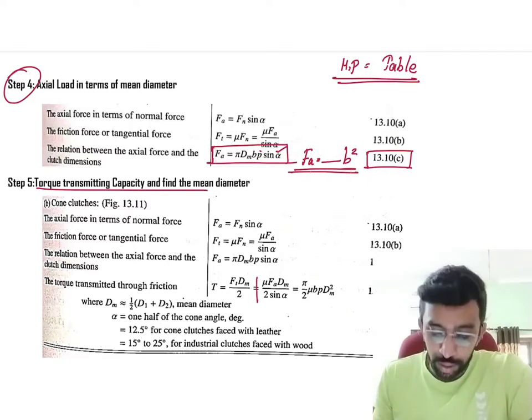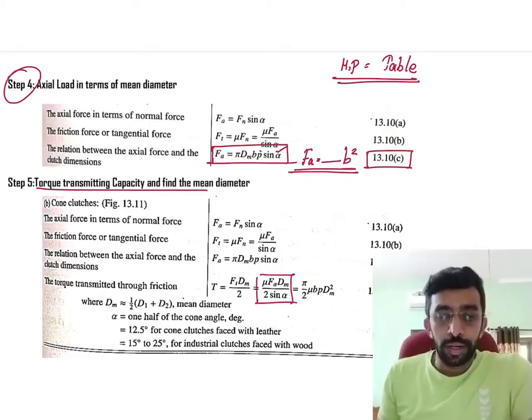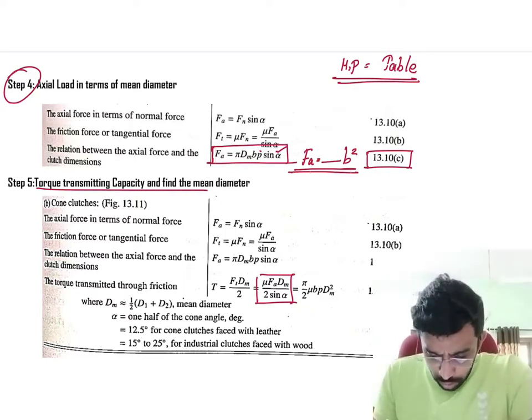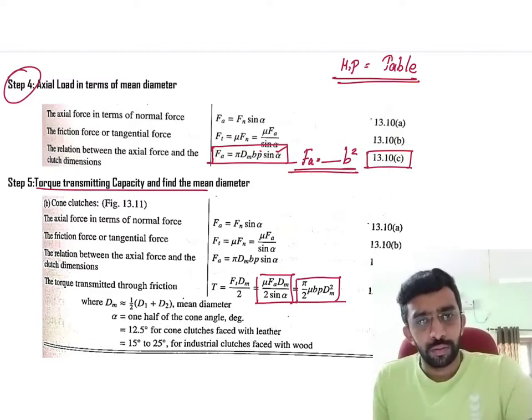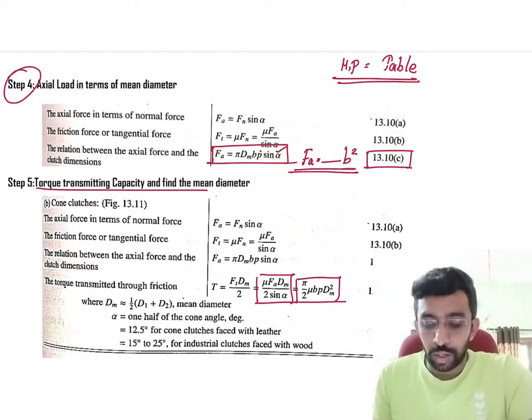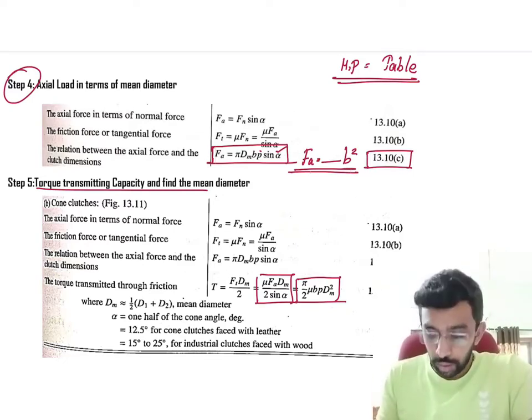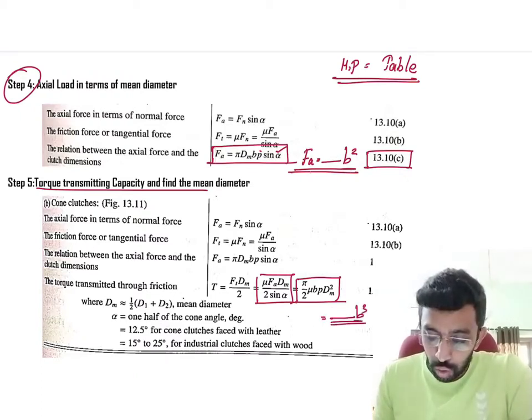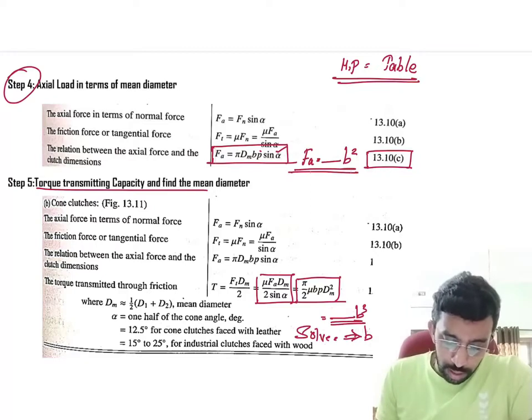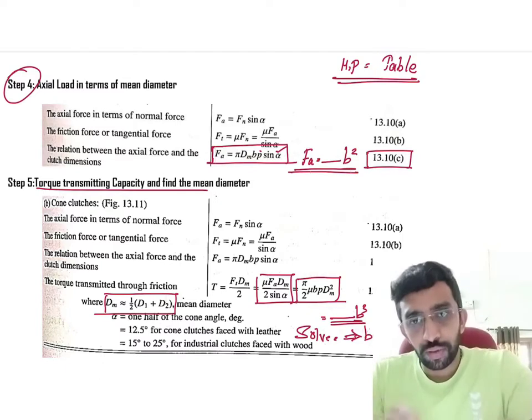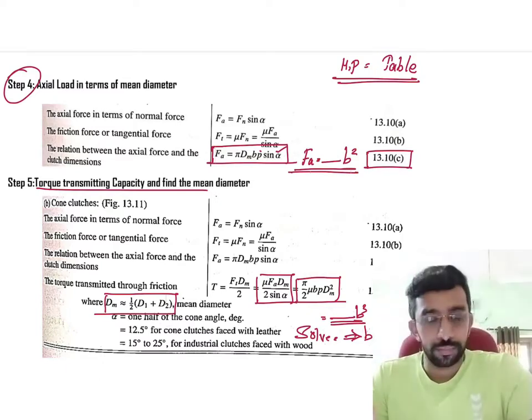And from here, if you move forward, you are now supposed to calculate the torque carrying capacity. For that, you can use this relation μF_a dm/(2 sin α). F_a, you have already, it's already available. Or else you can use this equation also, no problem. If you substitute here, dm², so dm is already in terms of b. So, square, it's going to be in terms of b², one more b is there. So, if you multiply it, it is going to be in terms of b³. Solve and get the value of b. And this relation is given here, (d1 + d2)/2. This is not really used. You can use this when you have the value of d1 and d_out or d_inner or d_outer.